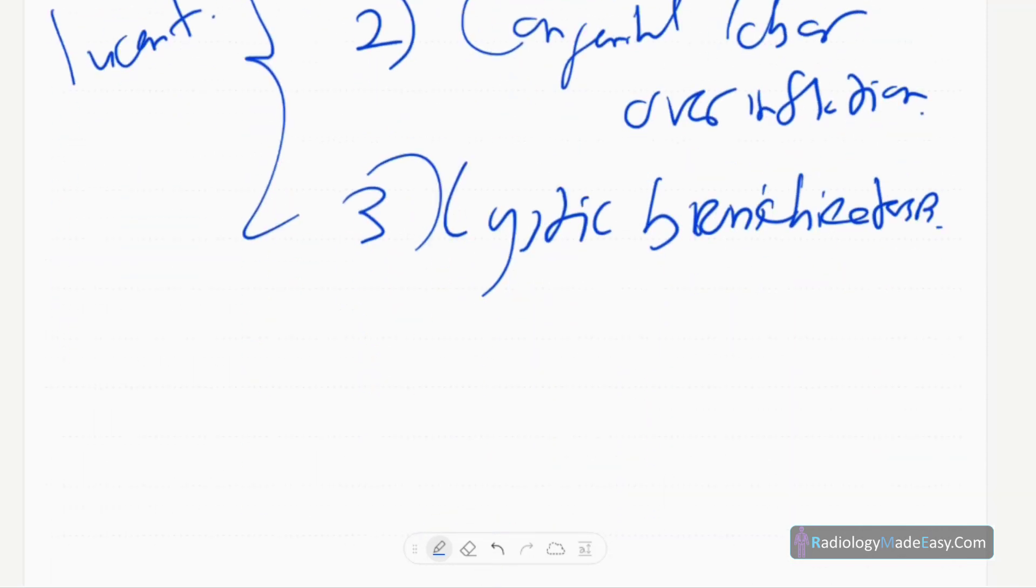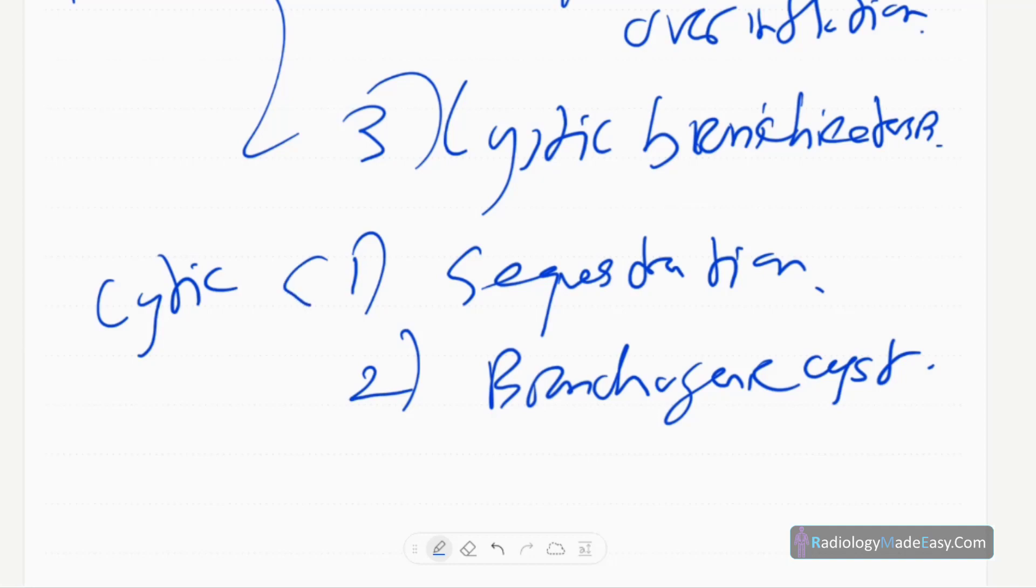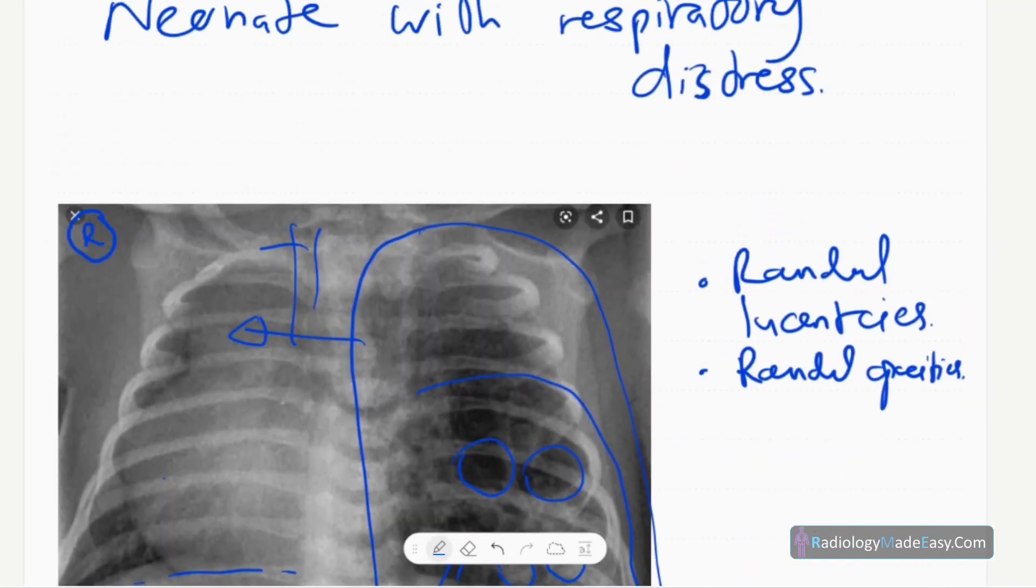If there are solid ones, for cystic lesions you have to think of sequestration and bronchogenic cyst. These are differential diagnoses of cystic lesions for CPAM, congenital pulmonary airway malformations.